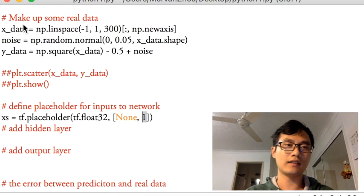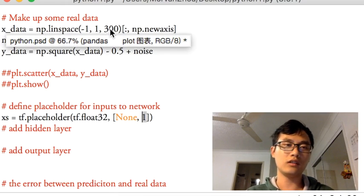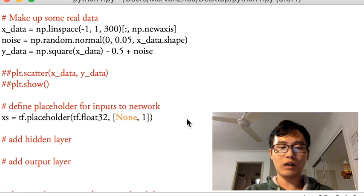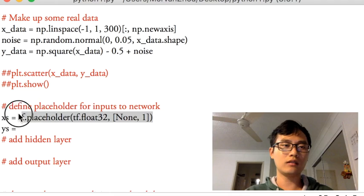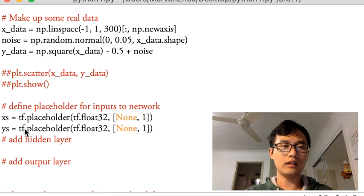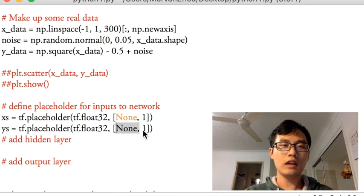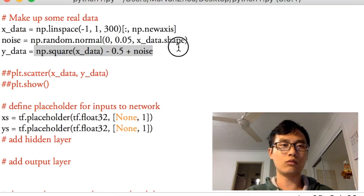So this one is None to accept all possible number of samples. And this one is how many features for this x_data. In here I just have one feature, so I put 1 over here. And the y-axis is the same as x-axis in this example, because we have a number of samples, and only one output for the y-axis, because y-axis is just one number.